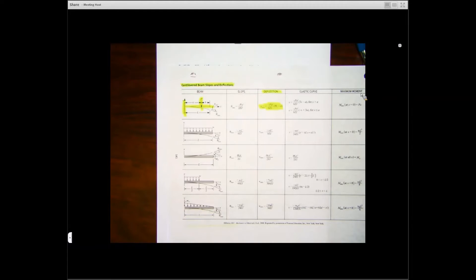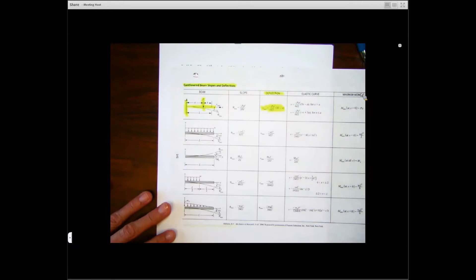But there is on page 140 simply supported beam deflection diagrams as well. So somehow I put that in the wrong page in my book, I think. But anyway, we don't need that. We're going to look at page 141, but just know that on page 140 are the simply supported beams as well.